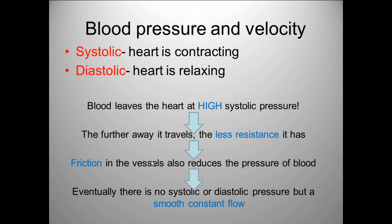This diagram here gives us an explanation of what happens to the pressure as you go further away from the heart. As the blood leaves the heart, it leaves under high systolic pressure. As you move further away from the heart, friction within the vessels reduces the pressure of the blood, and so eventually there is no systolic or diastolic pressure but a smooth constant flow.